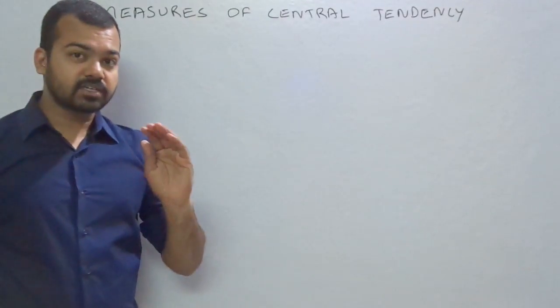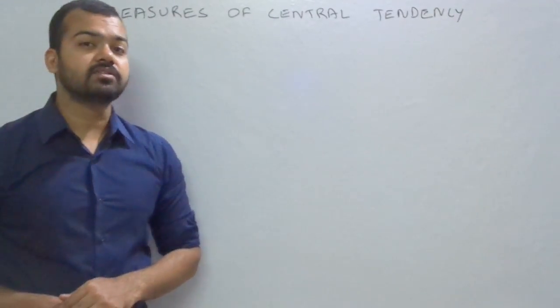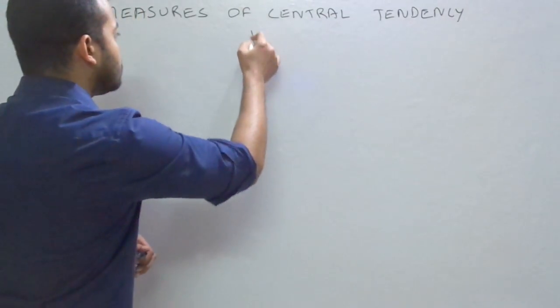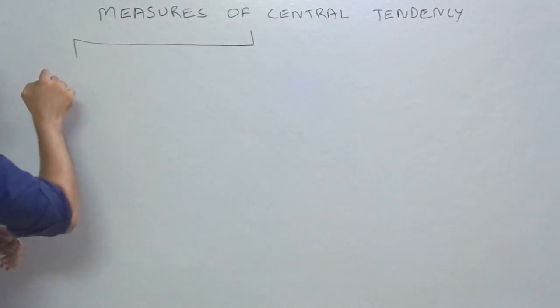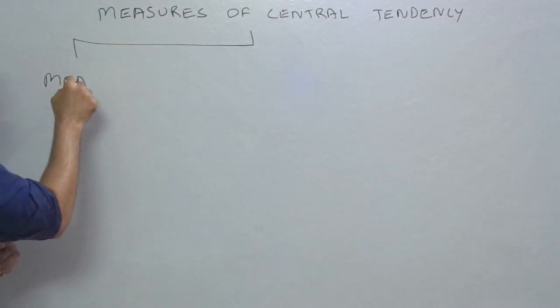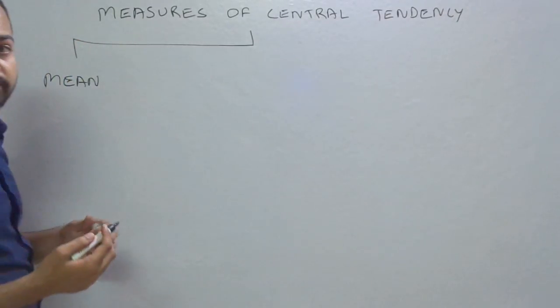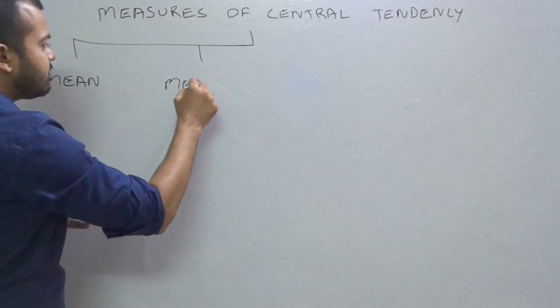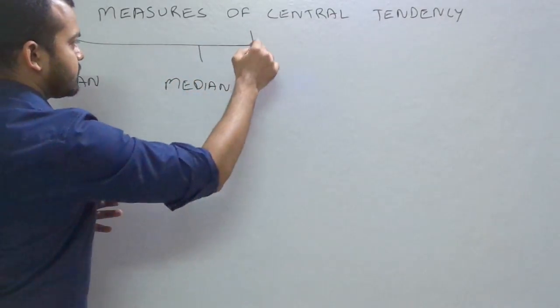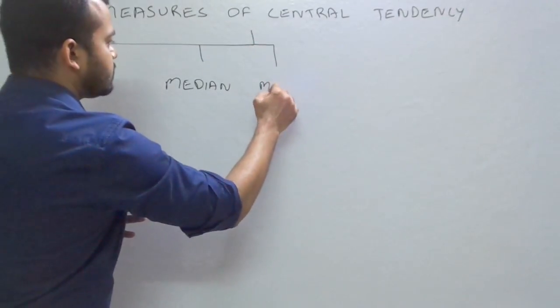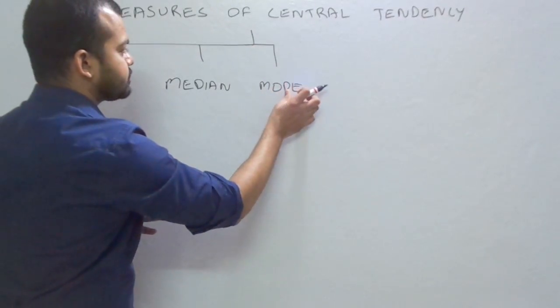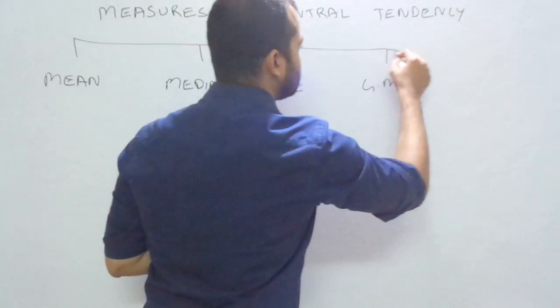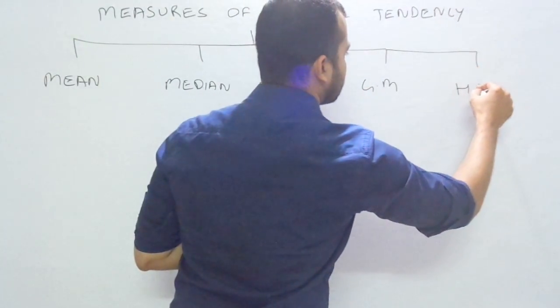The measures of central tendency can be calculated with the help of five methods. First is mean, which in layman's language we also refer to as average. Second is median, third is mode, fourth is geometric mean, and fifth is harmonic mean.